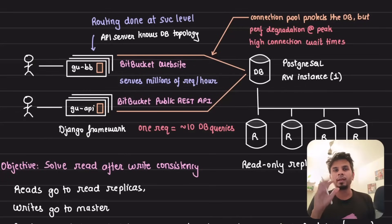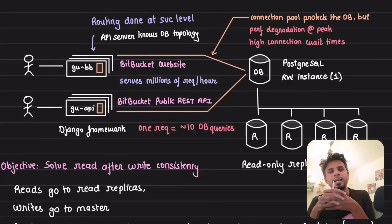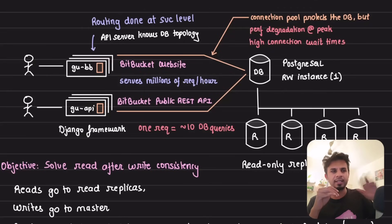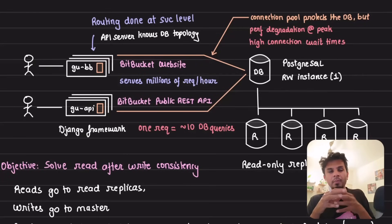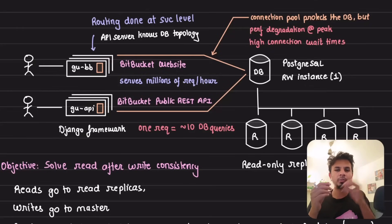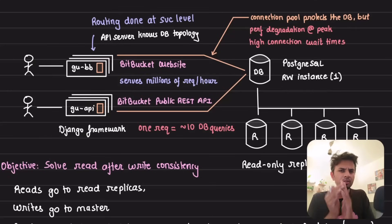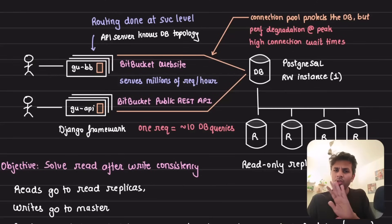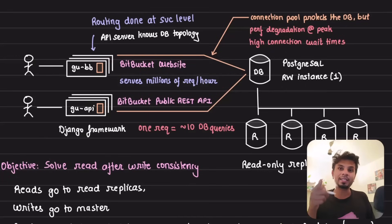One of the core problems in a code revisioning tool like Bitbucket is ensuring read-your-write consistency. You either go with strong consistency — no matter where your read goes, you're reading what was written — or at least you need read-your-write consistency, which means the most recently written thing, when I issue a read for it, I should be able to get it. On a single node this is straightforward, but with a master-replica setup things get interesting.